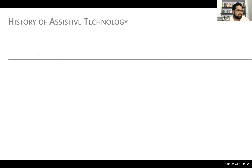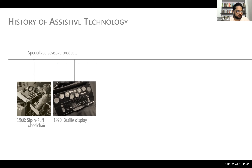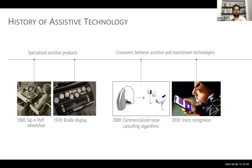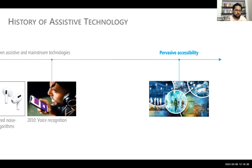Looking at the history of assistive technology, the world is already moving toward accessibility everywhere. We initially built specialized assistive products supporting specific tasks. But recently, we've seen crossover between assistive and mainstream technology: noise-canceling from hearing aids is now integrated into Apple AirPods; voice-activated technologies benefit blind, mobility-impaired, and non-disabled users alike; mainstream products like smart speakers are now providing accessibility. Technologies like SoundWatch have been used to benefit hearing people as well.